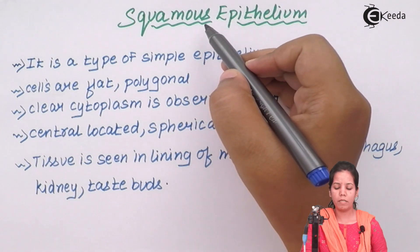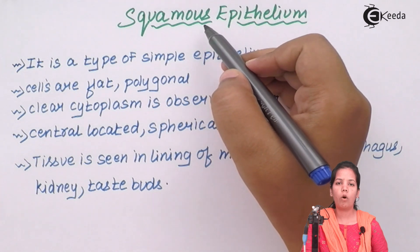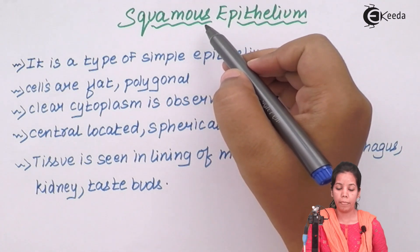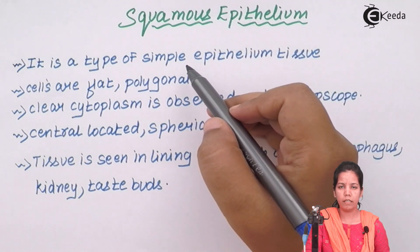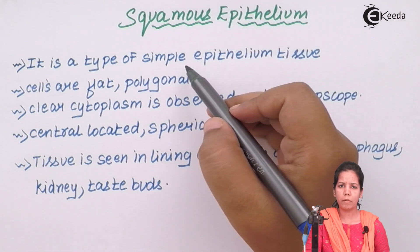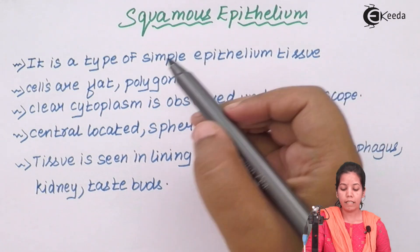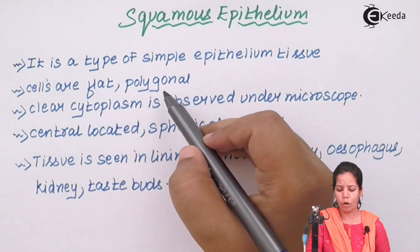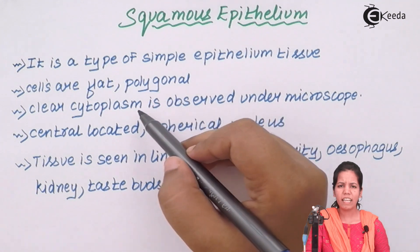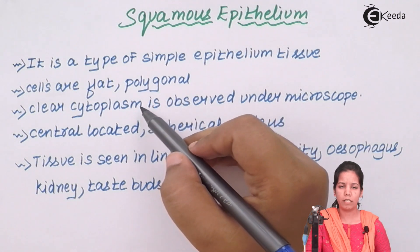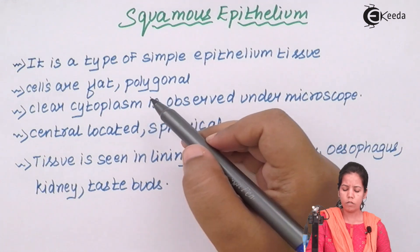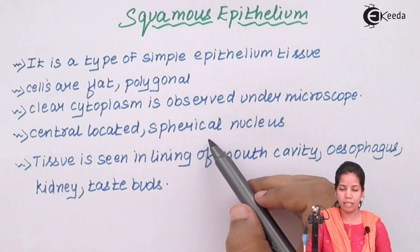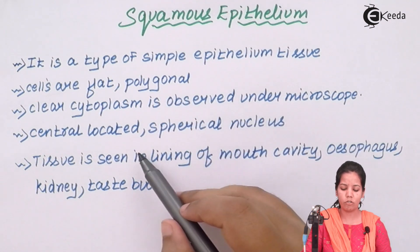Squamous epithelium is one of the simple epithelial tissues among many. Being a simple epithelial tissue, its structure is quite simple. The cells are basically flat and polygonal in structure. There is a clear cytoplasm seen, and the matrix is never present in this tissue. There is also a nucleus that is spherical and always centrally located.